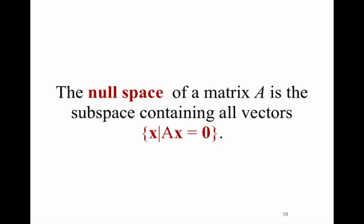The null space of a matrix A is the subspace containing all the vectors X such that A times X equals 0. This simply means that if you have a matrix A, any vector that you multiply A times and it gives you the zero vector is in the null space of A. Any vector that when you multiply it by A gives you the zero vector — it's in the null space of A. That's all it means.